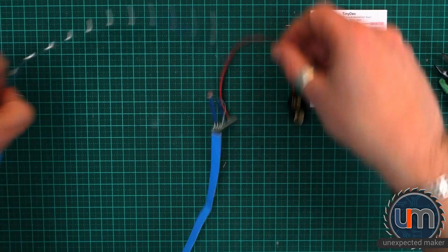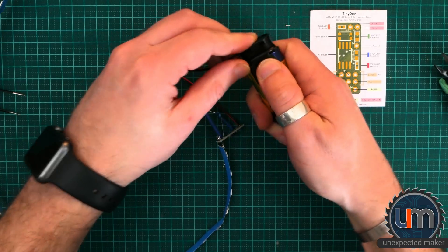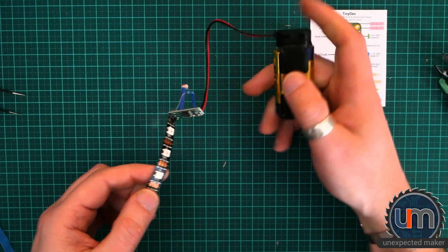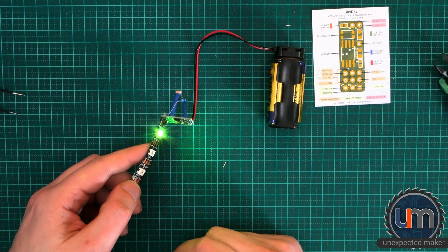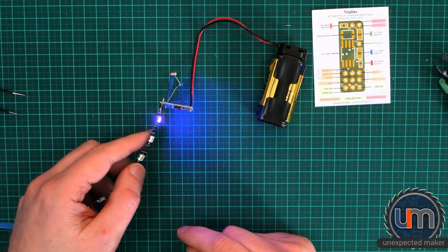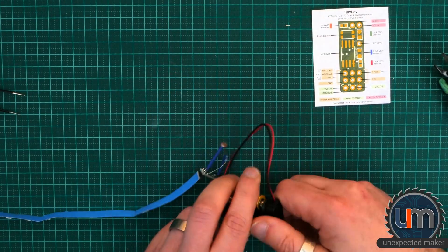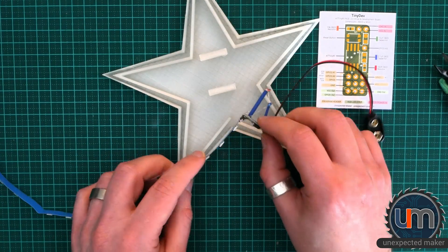Now all of my TinyDevs actually ship with some strand test code on there for one pixel. So assuming you put some pixels on, you should see something if you power it up. Yeah, so right now I'm using two AAs, but there's no reason why you couldn't use AAAs. They'll just have a lower milliamp hour rating. Let's start putting all this together.